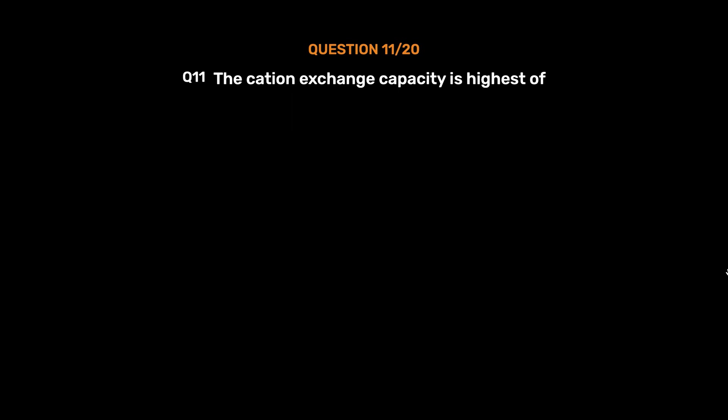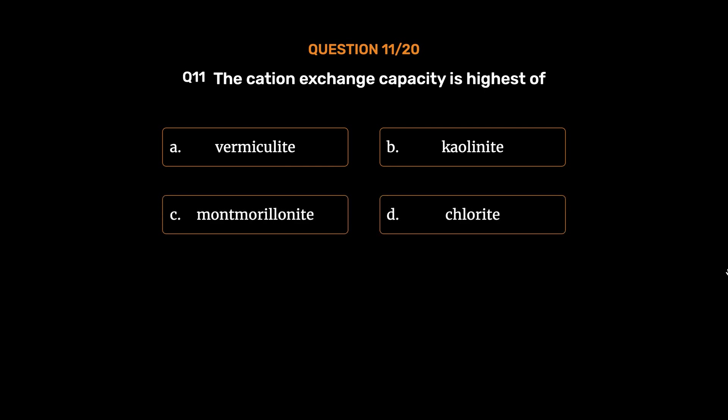Question number 11. The cation exchange capacity is highest of: option A, Vermiculite; option B, Kaolinite; option C, Montmorillonite; option D, Chlorite. The correct answer is option A, Vermiculite.